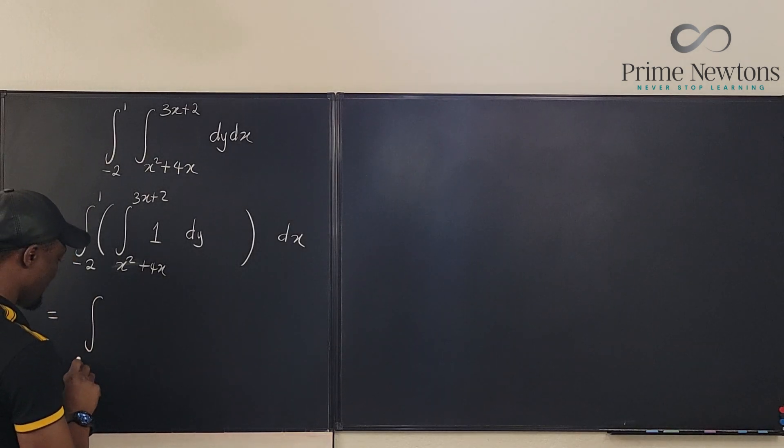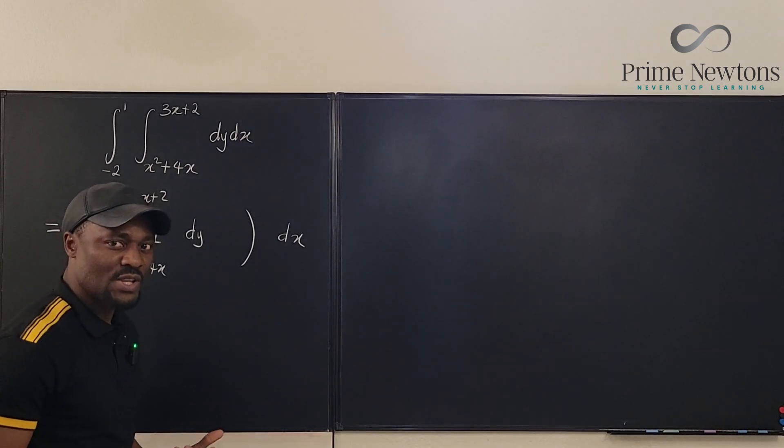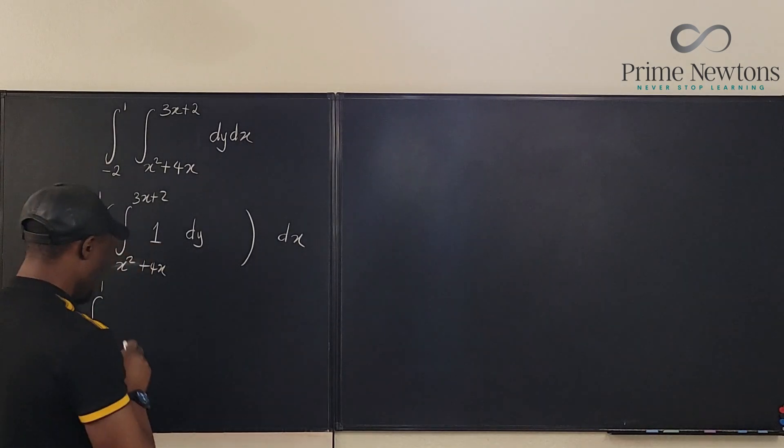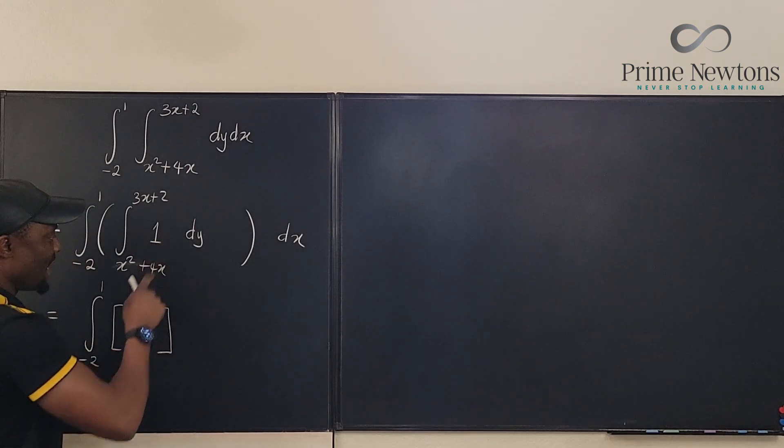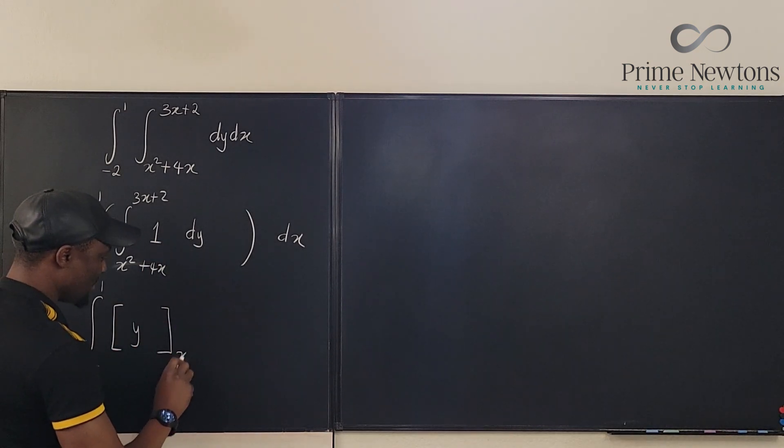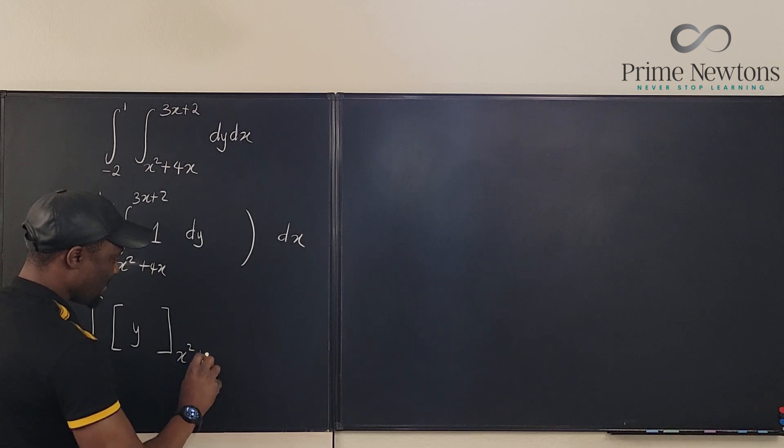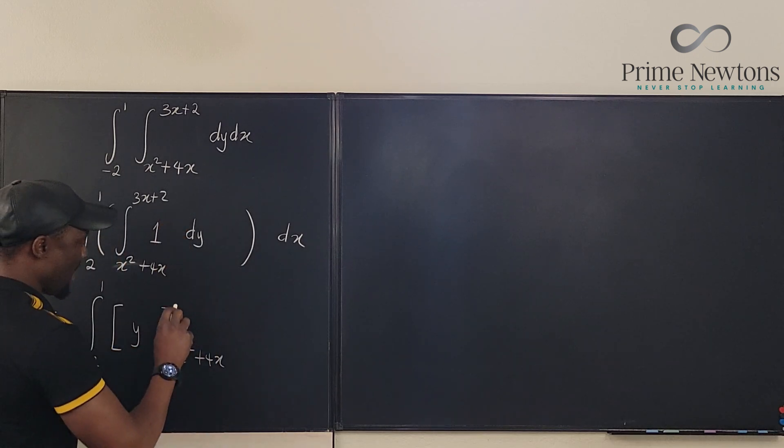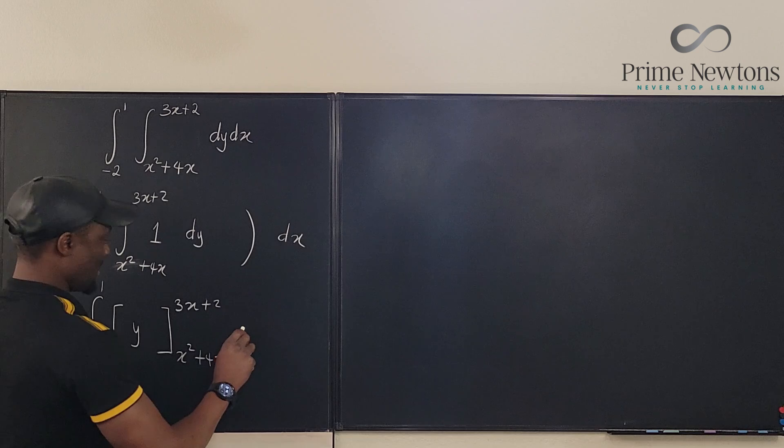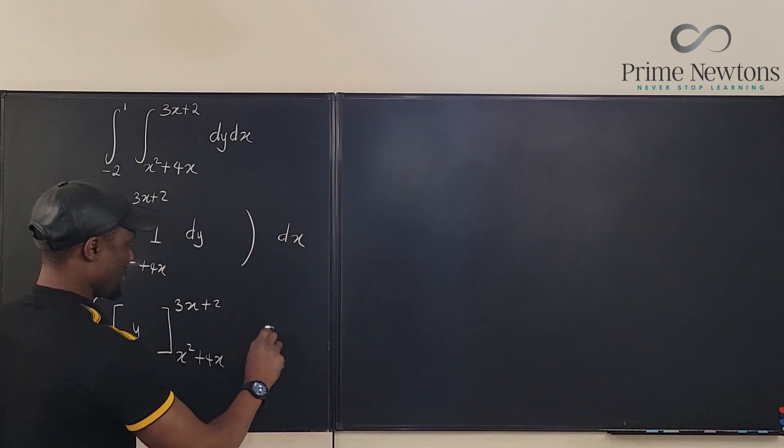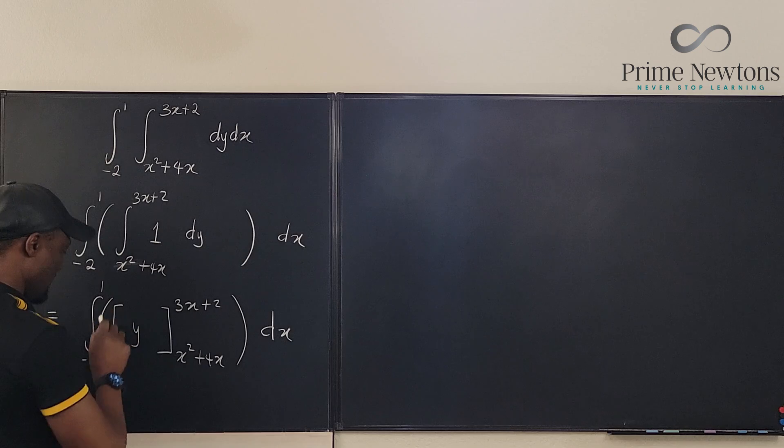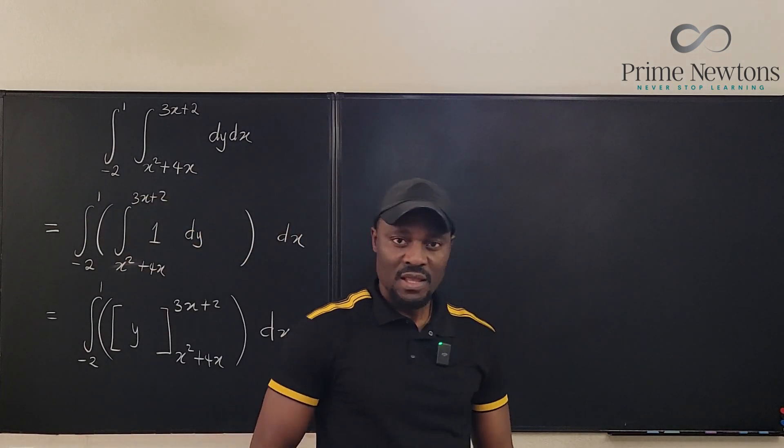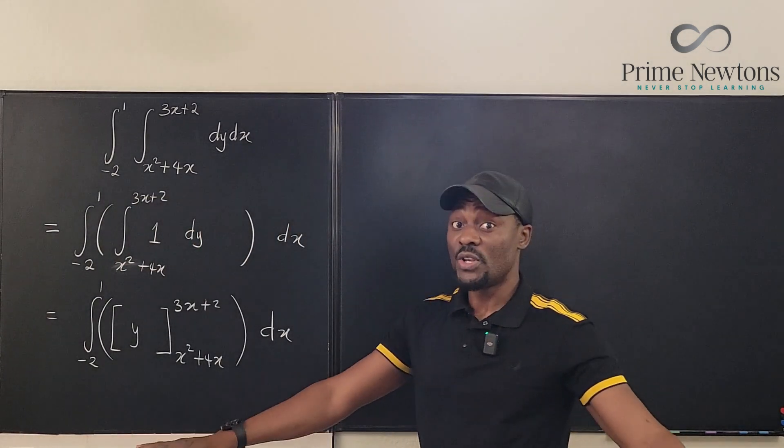This is the integral from negative 2 to 1 of, if you integrate one dy, what would you get? Well, you know, y shows up. So, what you have is basically y, but now you're going to evaluate this y from this lower bound, which is x squared plus 4x to the upper bound, 3x plus 2. And this dx. I'm going to leave it this way. That's all you need to do.